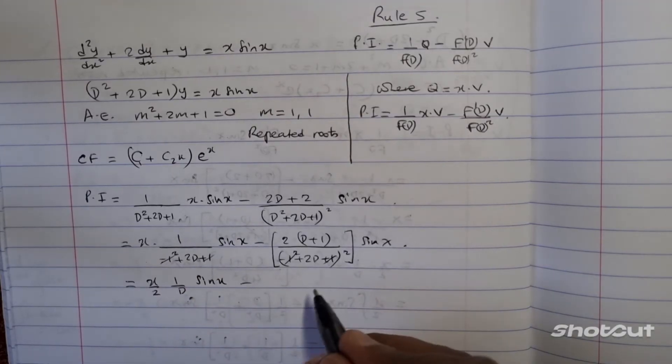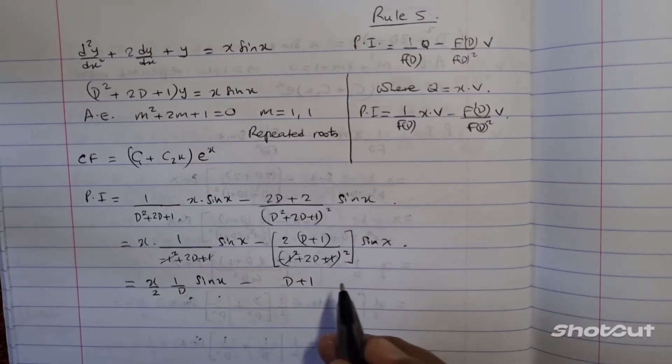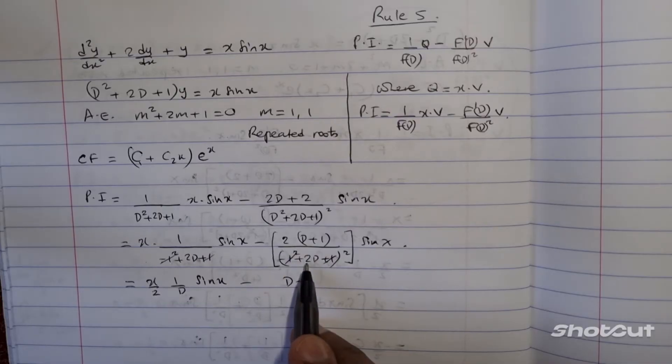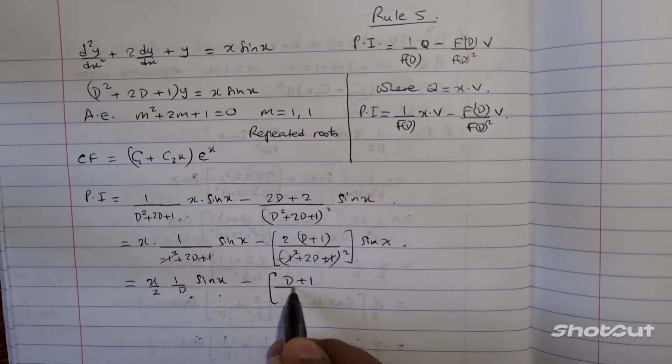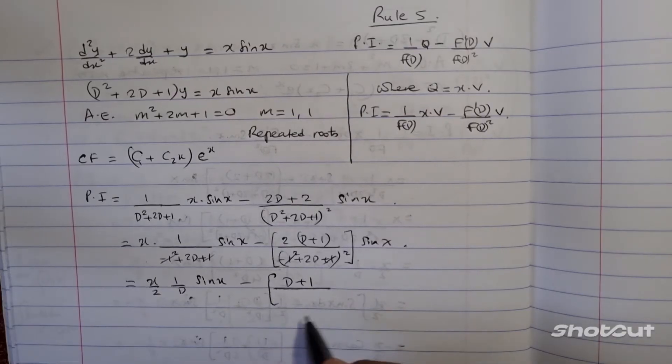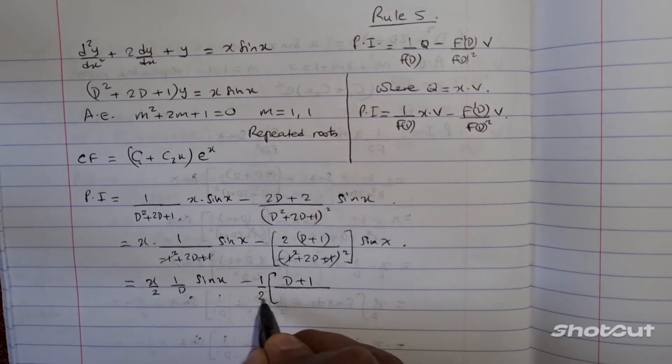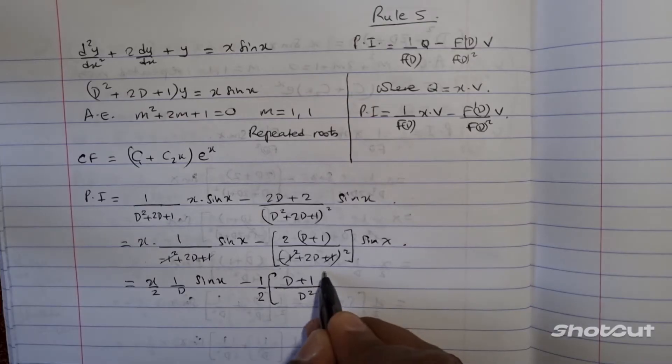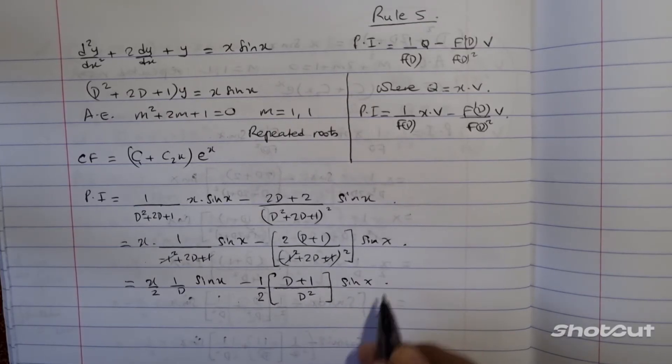over here, I've got d plus 1, 2 to the square is 4, 2 divided by 4 is 2, so I've got then, this is going to be 2. 2, so I can pull the 2 outside, so that becomes half outside, and inside I'm left with d square, all right, and all of that into sine of x.